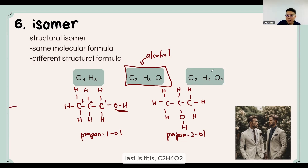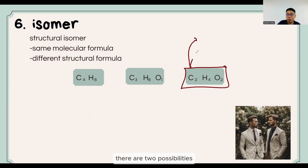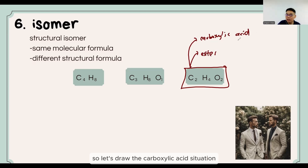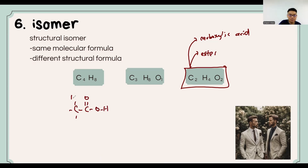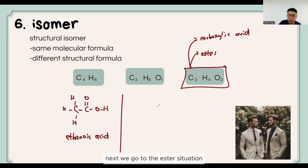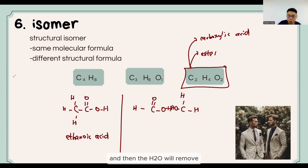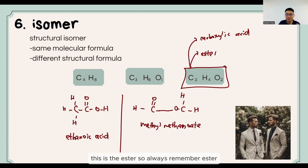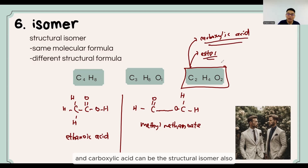The last case is C2H4O2. There are 2 possibilities: carboxylic acid or ester. For the carboxylic acid: C2 with a COOH group gives C2H4O2 — this is ethanoic acid. For the ester situation, initially you start from an acid and an alcohol, then H2O is removed, giving methyl methanoate. So always remember: an ester and a carboxylic acid can also be structural isomers.